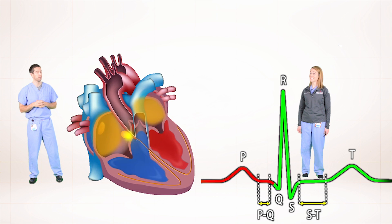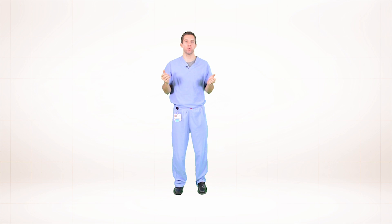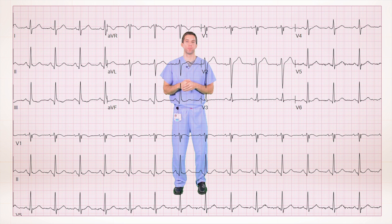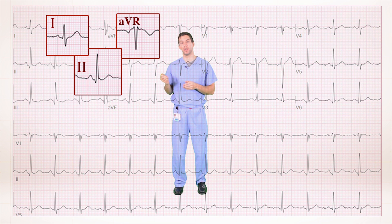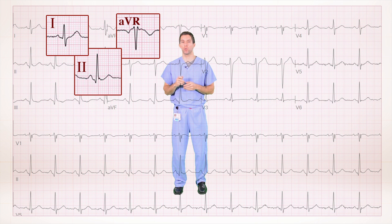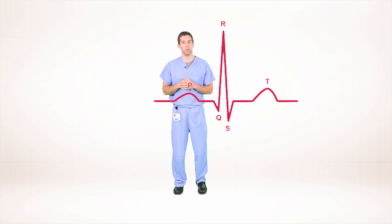Whoa, that was fast. Let's take a closer look at each wave. Here we have a 12-lead EKG. Where should we look at our P waves? Normal P waves should be upright in leads 1 and 2, and inverted in lead AVR. Let's take a closer look at lead 2 — a great lead to look at P wave morphology. Here we have a normal QRS complex with a normal P wave. Normal P waves should be smooth, monophasic, and less than 120 milliseconds.